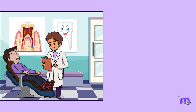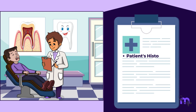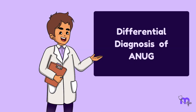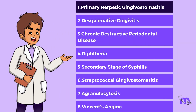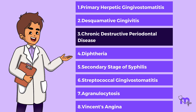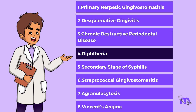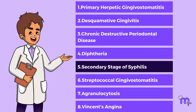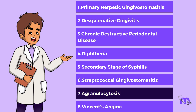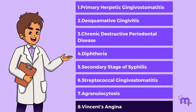After collecting all information about the patient's history, signs and symptoms, and assessing the causative factors, ANUG was a definitive diagnosis. The differential diagnoses include primary herpetic gingivostomatitis, desquamative gingivitis, chronic destructive periodontal disease, diphtheria, secondary stage of syphilis, streptococcal gingivostomatitis, agranulocytosis, and Vincent's angina.